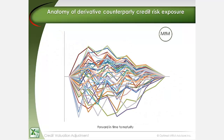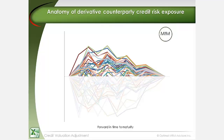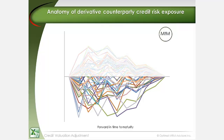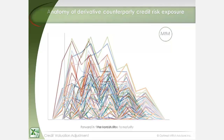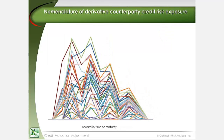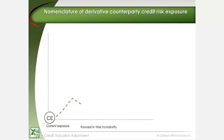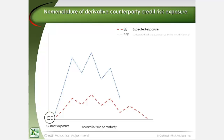The derivative position's mark-to-market may be positive or negative. A bank or derivatives dealer is primarily concerned with derivative positions that are mark-to-market in its favor. The initial exposure is defined as the current exposure, or CE. Expected exposure, or EE, is defined as the average of the distribution of exposures at each time step. Potential future exposure, or PFE, is defined as the expected exposure at a specific confidence level, such as 95%.